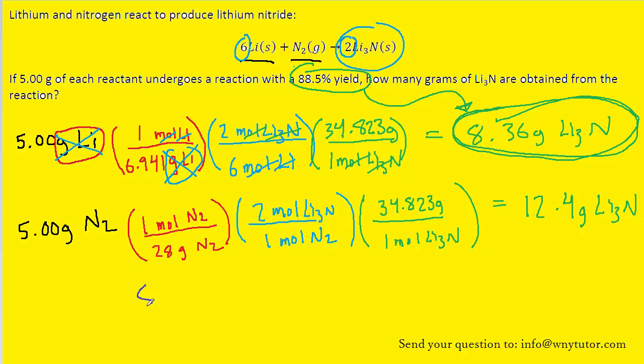We can do that here. We're basically just going to take 88.5 percent and multiply that by the calculated number of grams. That calculated number of grams is referred to as the theoretical yield. What we're determining is the actual yield, and that turns out to equal approximately 7.4 grams of lithium nitride.